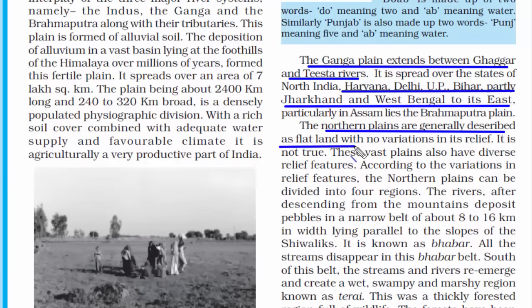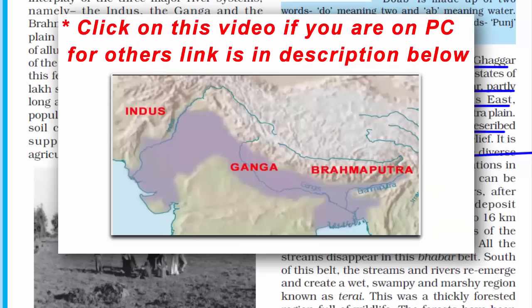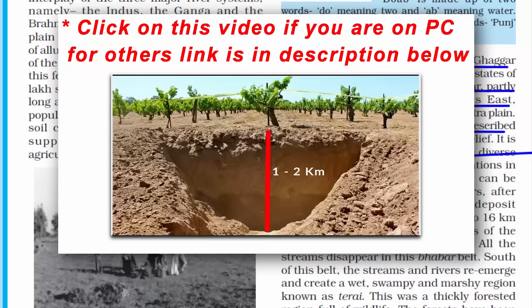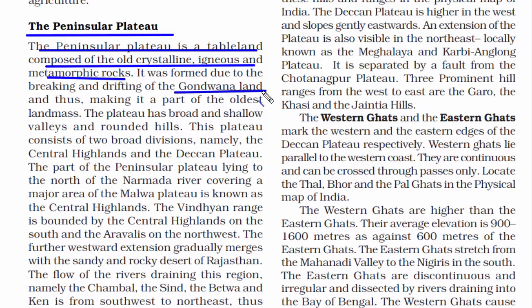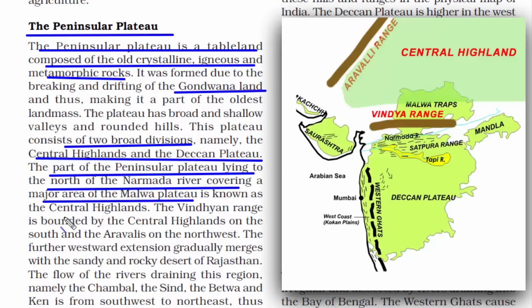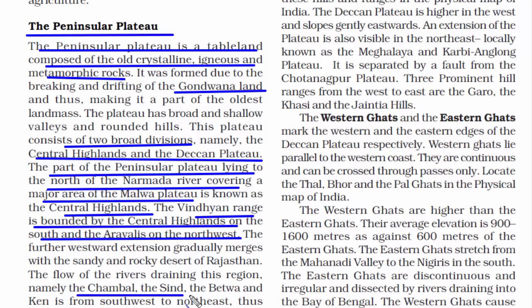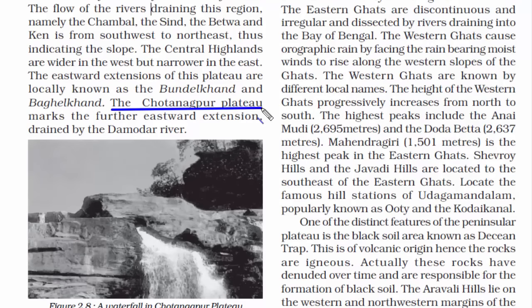The Peninsular Plateau is a tableland — flat land composed of old crystalline, igneous, and metamorphic rocks. It is the oldest land block and was part of Gondwana land. It is broadly divided into two categories: the Central Highlands and the Deccan Plateau. The Central Highlands lie to the north of the Narmada River, covering the major area of the Malwa Plateau, bounded in the south by the Vindhya Range and to the northwest by the Aravallis. Rivers here include the Chambal, Sindh, Betwa, and Ken. The Central Highlands extend to the Chota Nagpur Plateau in the east.